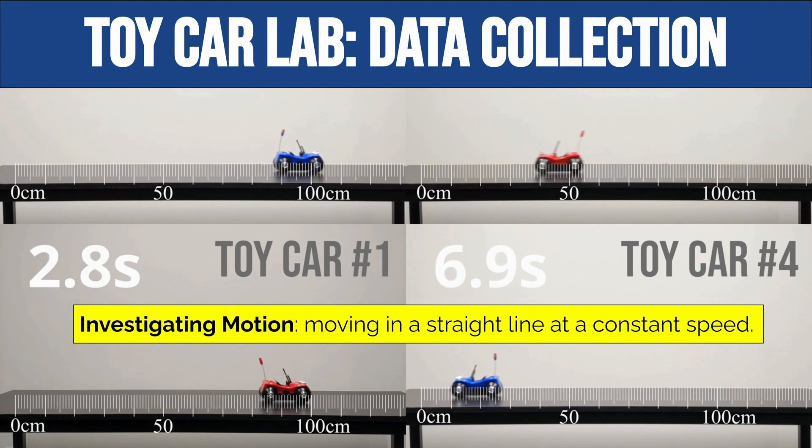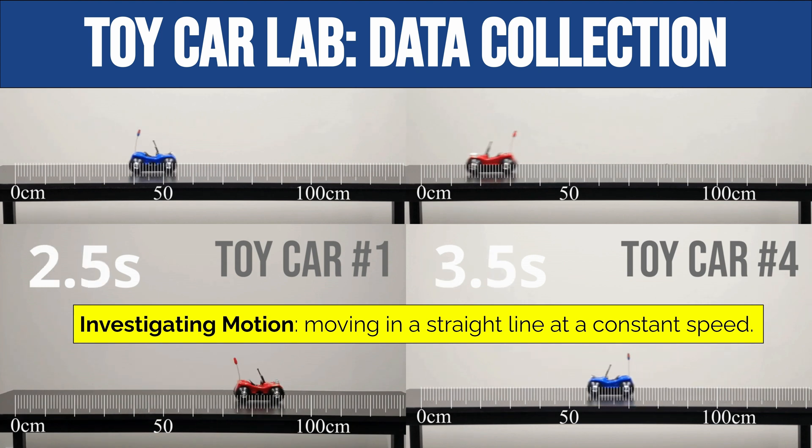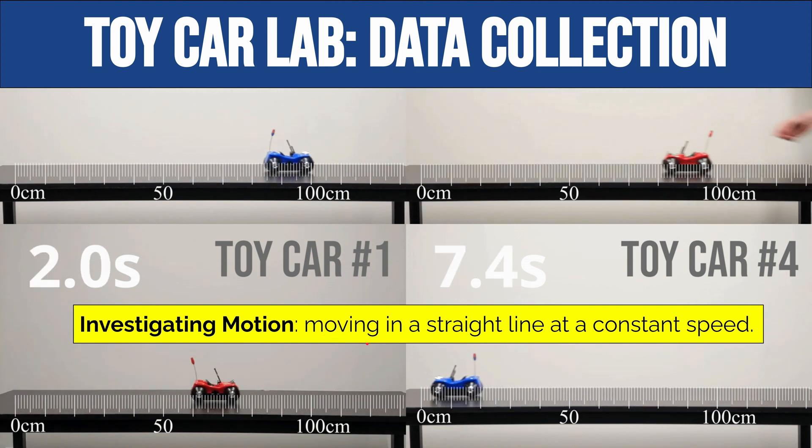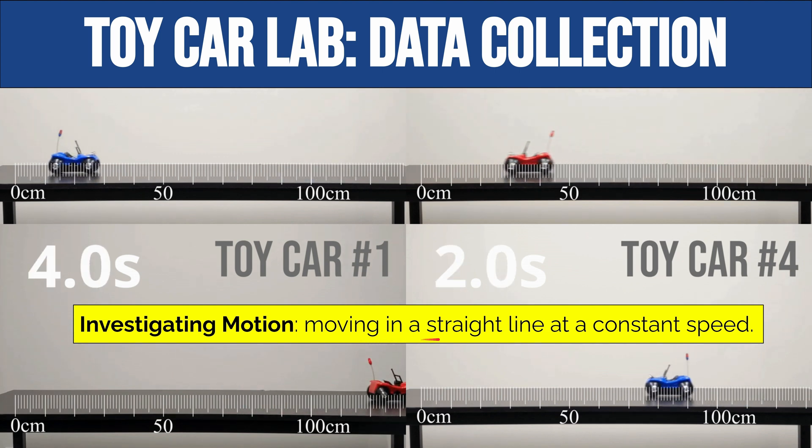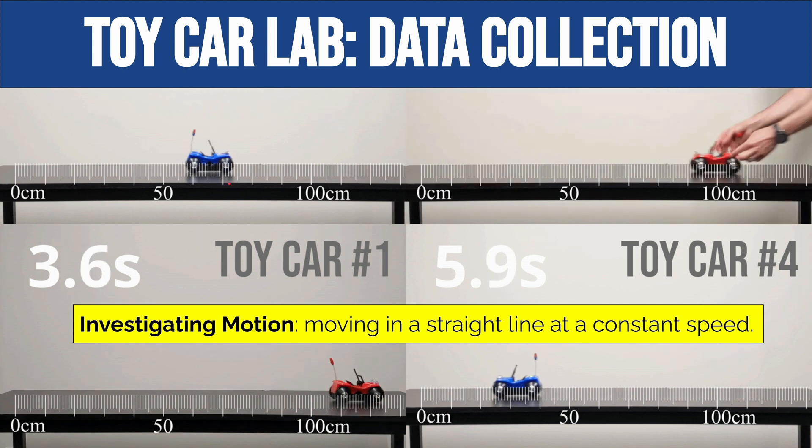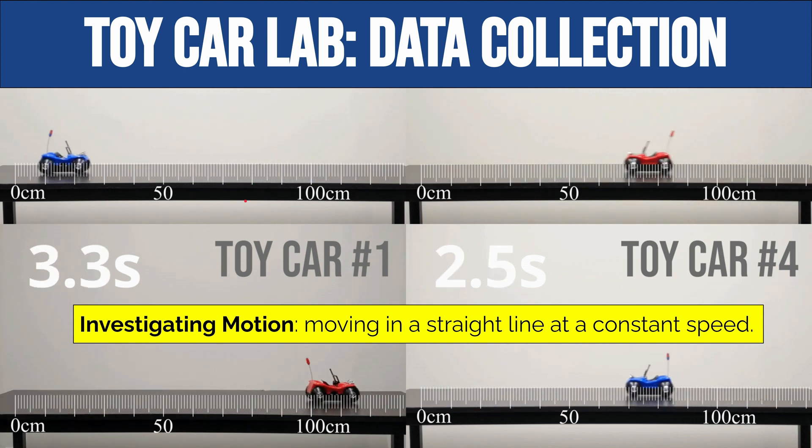In this video, I want to briefly walk you through how to collect data for our toy car lab. Our toy car lab is our first investigation of the year. We're investigating a fairly basic kind of motion, which is something moving in a straight line at a constant speed. And you can see in all these cases, we have a little battery-operated toy car, which is moving at different speeds in different directions.